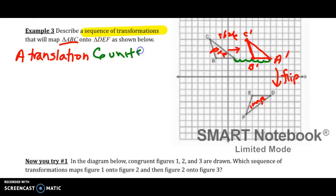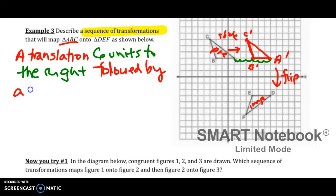Six units to the right, followed by a flip, which is a reflection, over the x-axis. Again, we have the coordinate grid, so we are able to count how many units it was translated by. We have a line of reflection that we can use as our reference.